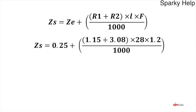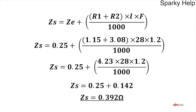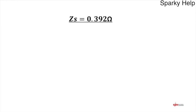Plugging in the figures: ZE = 0.25 ohms; R1 = 1.15, R2 = 3.08 milliohms per metre; length = 28 metres; factor = 1.2; divided by 1,000. R1 plus R2 equals 4.23, multiplied by 28 and by 1.2, divided by 1,000, gives 0.142 ohms. That is your R1 and R2 at 70°C operating temperature.